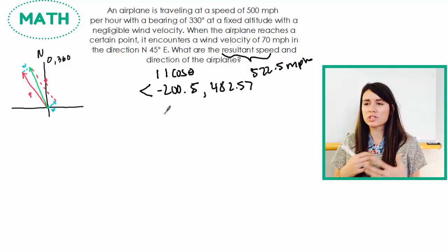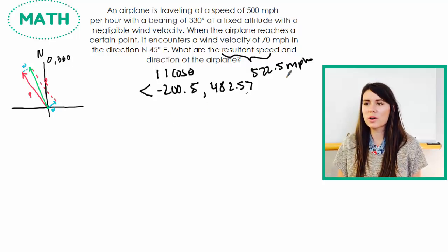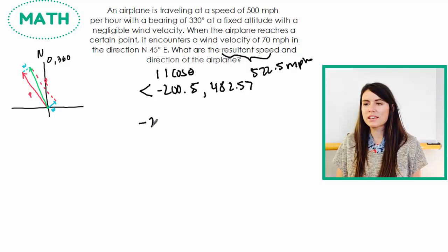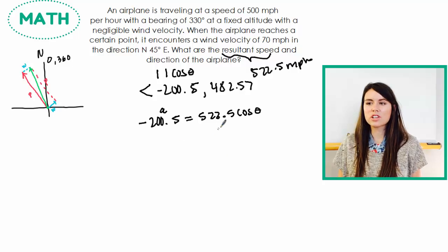I know the magnitude is this amount, so I know that negative 200.5, this is also called A. A equals the magnitude of the vector, so 522.5 times cosine theta. And then I just solve for theta, so I'm going to divide by 522.5, divide by 522.5. And then I do cosine inverse of this, that gives me my angle.